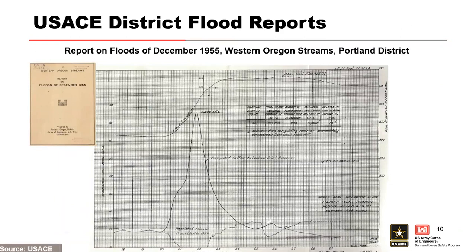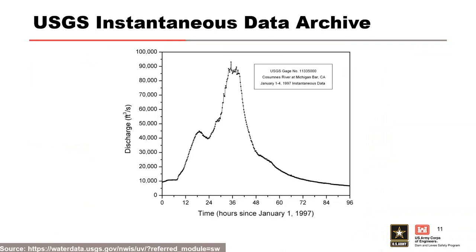USACE district flood reports are also referenced in some cases by the USGS in water supply papers for specific floods — for example, the December 1950, 1955, and 1964 floods in California, Oregon, Washington, and other western states. Using online digitizers can be really helpful when you have that kind of data.